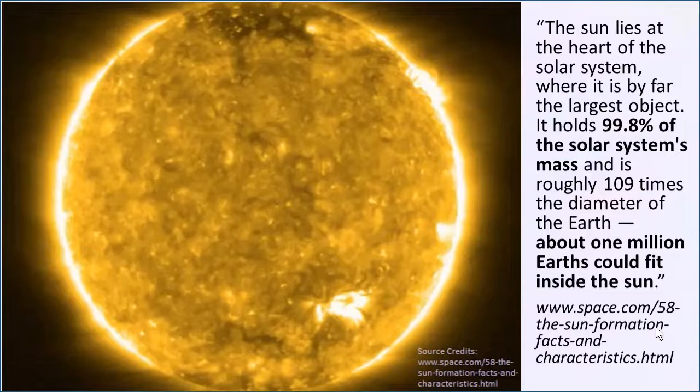So let's start off with the Sun. If we think about the Sun physically out there, the Sun lies at the heart of the solar system. Obviously, we on planet Earth and all the other planets are going around the Sun. We all know that. One thing that is not so obvious is how big the Sun is. It's 99.8% of the solar system's mass.